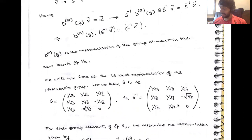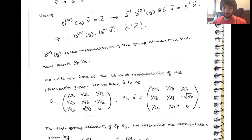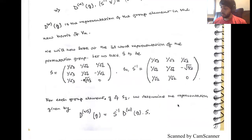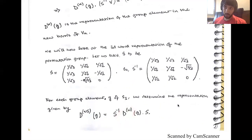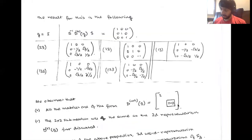Let's take S to be an object like this — it's a 3×3 matrix — and you can easily work out what S-inverse is going to be. Now, for each group element g of S3, we are going to determine the representation such that D-W-S of g equals S-inverse D-W of g times S. So D-W is something that you've already worked out. If you put this S-inverse and S in, it's an exercise to show what you're going to get.